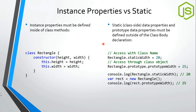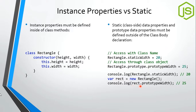Instance properties are accessed through the object of a class. To create static properties, we use the class name followed by a dot and the property name, then assign a value. That static field can then be accessed directly using the class name. To define an instance property after the class declaration, we can use the prototype keyword and associate it with the class, but it requires creating an object to access it.